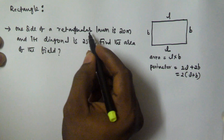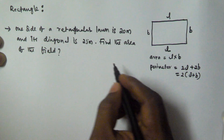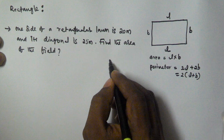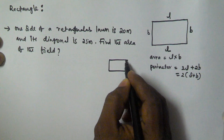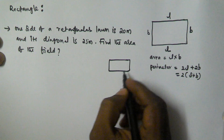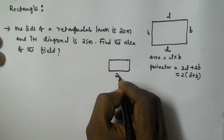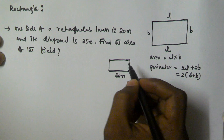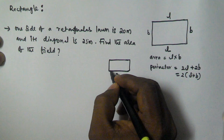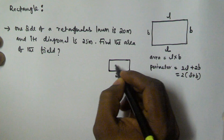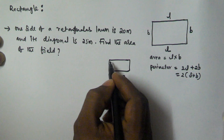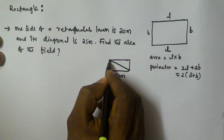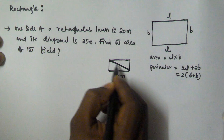One side of the rectangular lawn is 20 meters — the rectangular lawn is in the form of a rectangle. So one side is 20 meters; I am taking this as 20 meters. And its diagonal is 25 meters, which is connecting the opposite vertices.